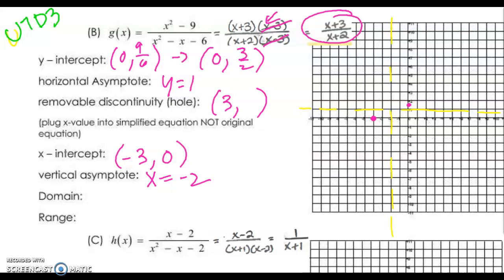So the removable discontinuity — once you have the x-coordinate from the cancelled factor, you now have this new simplified version. You're just going to plug the 3 into the simplified expression and see what you get for y. So that's going to be 3 plus 3 over 3 plus 2, so your discontinuity is just going to be at (3, 6/5).